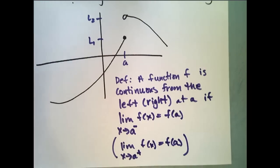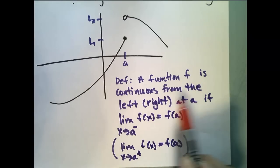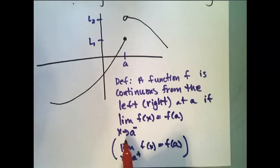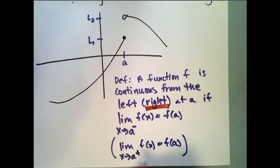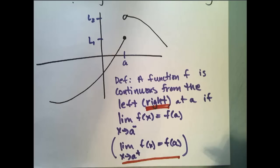So, a function f is continuous from the left at a if the limit as x approaches a from the left of f of x equals f of a. And it is continuous from the right at a if the limit as x approaches a from the right of f of x equals f of a.